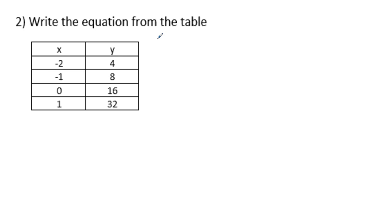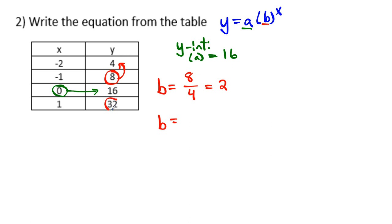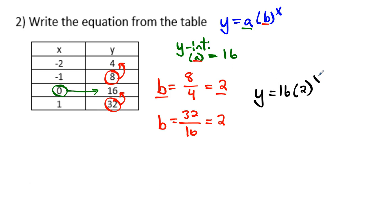Write the equation from this second table. Again, we want it in the form Y equals A times B to the X power. First find the Y-intercept — where X equals 0 — and that gives us A equals 16. Now find the ratio B the same way: 8 divided by 4 is 2. Let's verify: 32 divided by 16 also gives 2. So our equation is Y equals 16 times 2 to the X power.